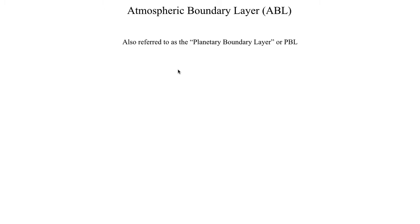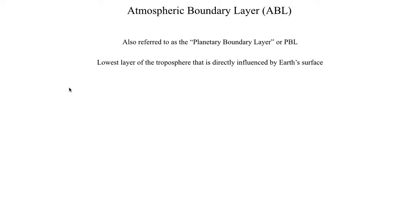By definition, the atmospheric boundary layer is the lowest layer of the troposphere that is directly influenced by the Earth's surface. Another characterization is that it's a region where friction is especially strong and where you have a lot of turbulent flow.